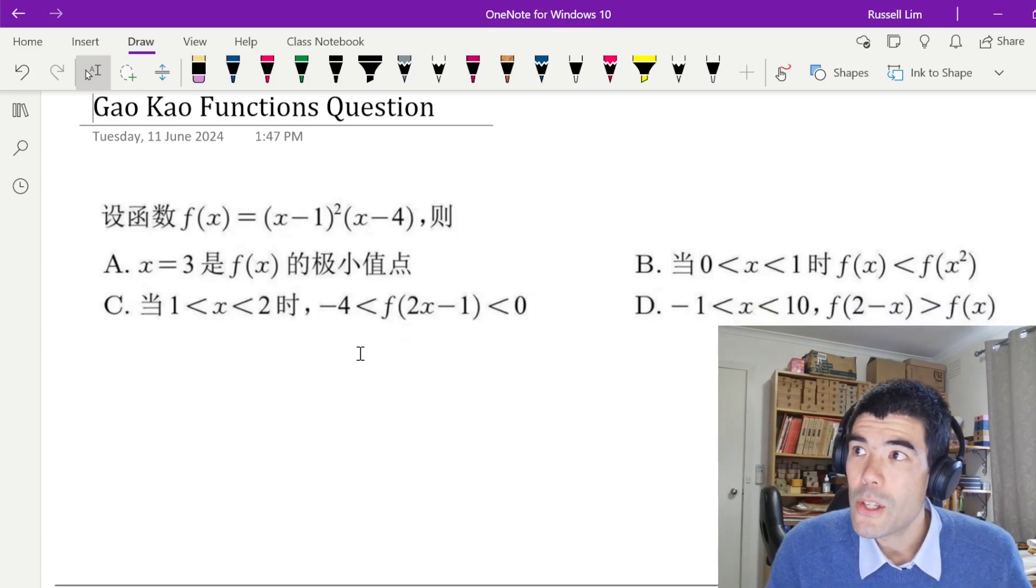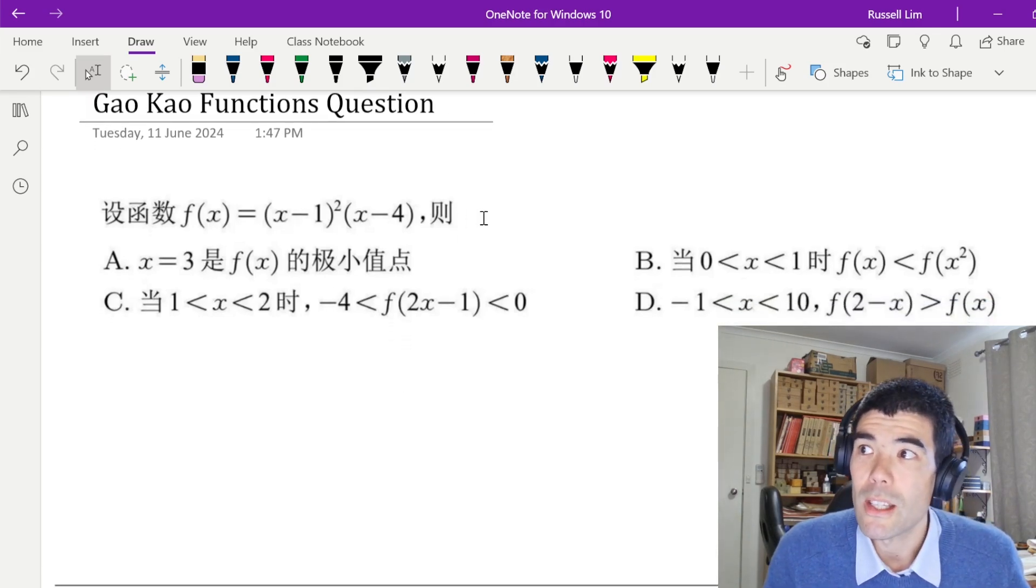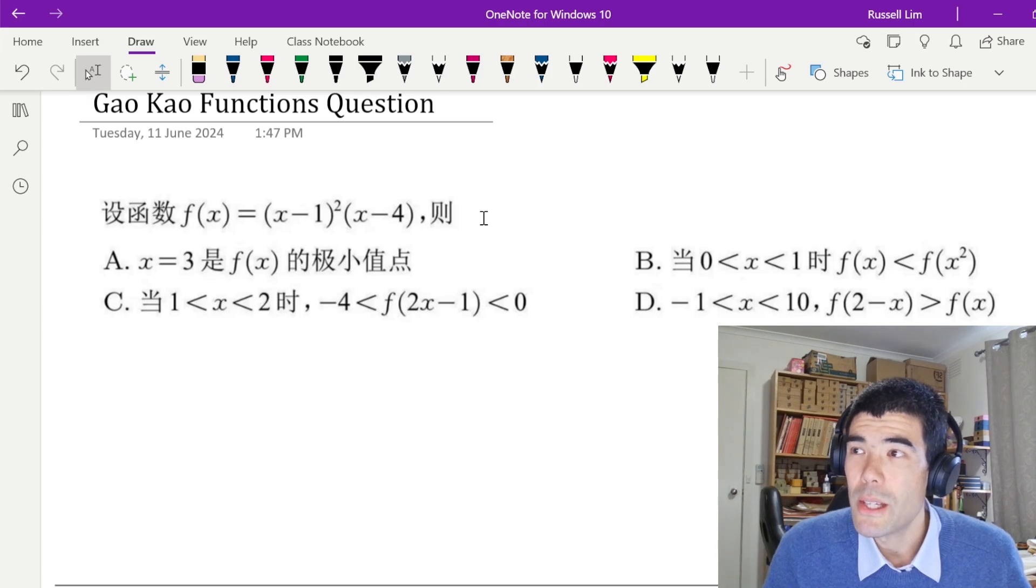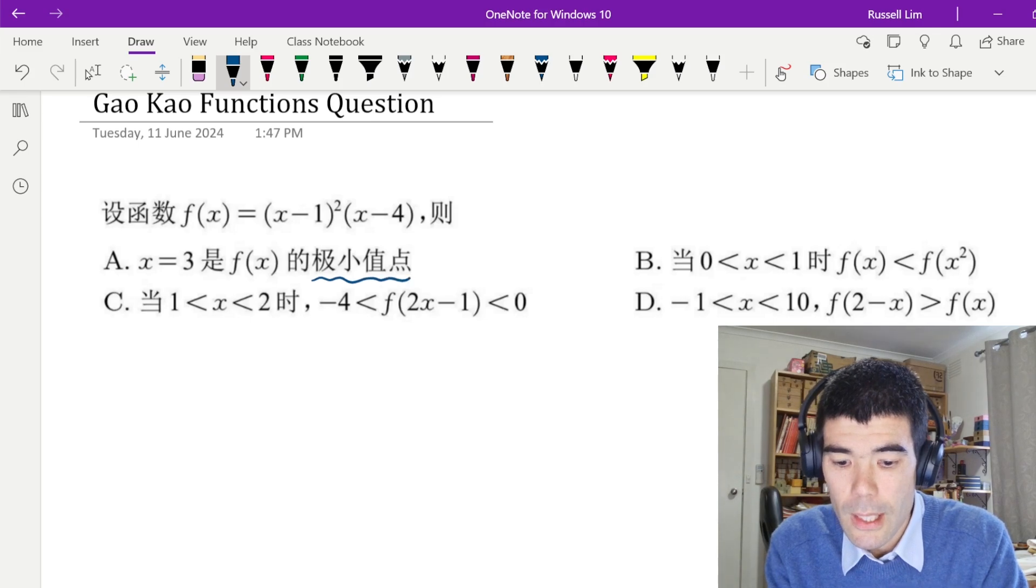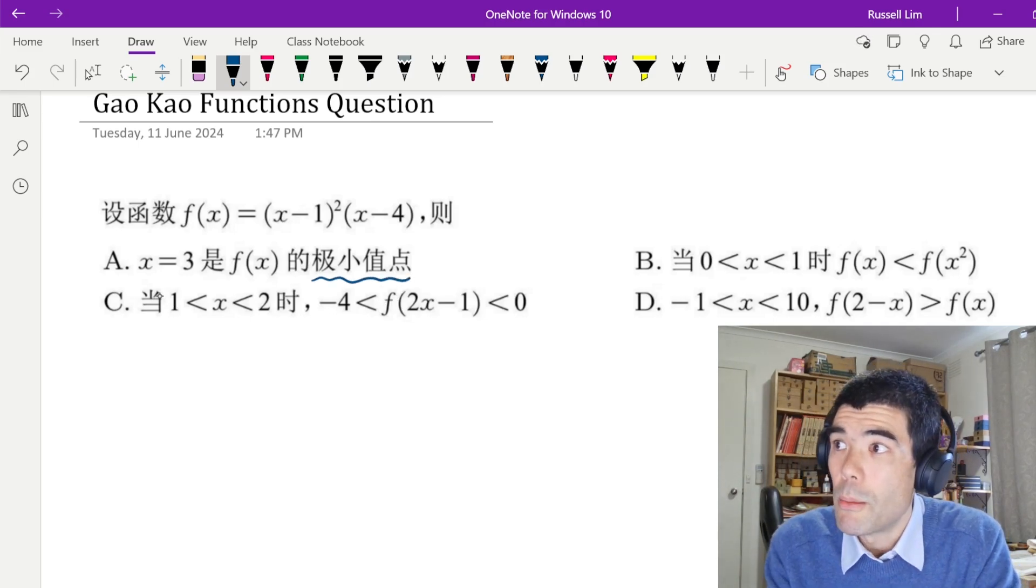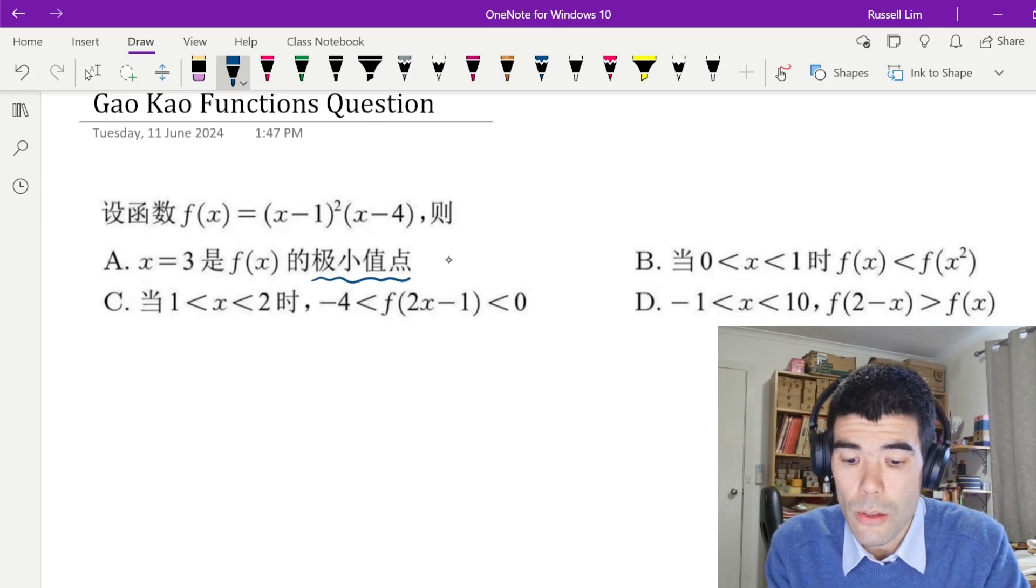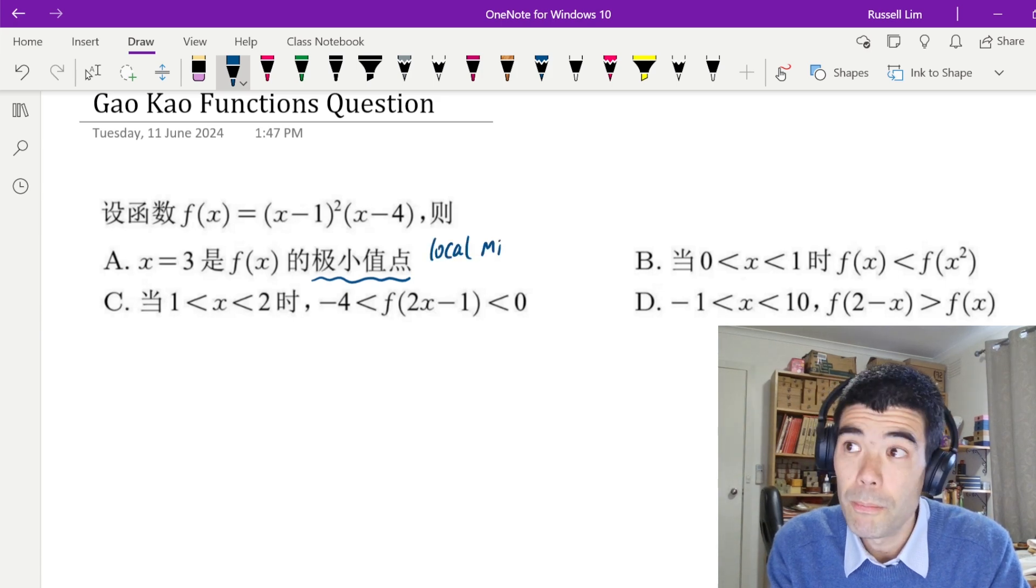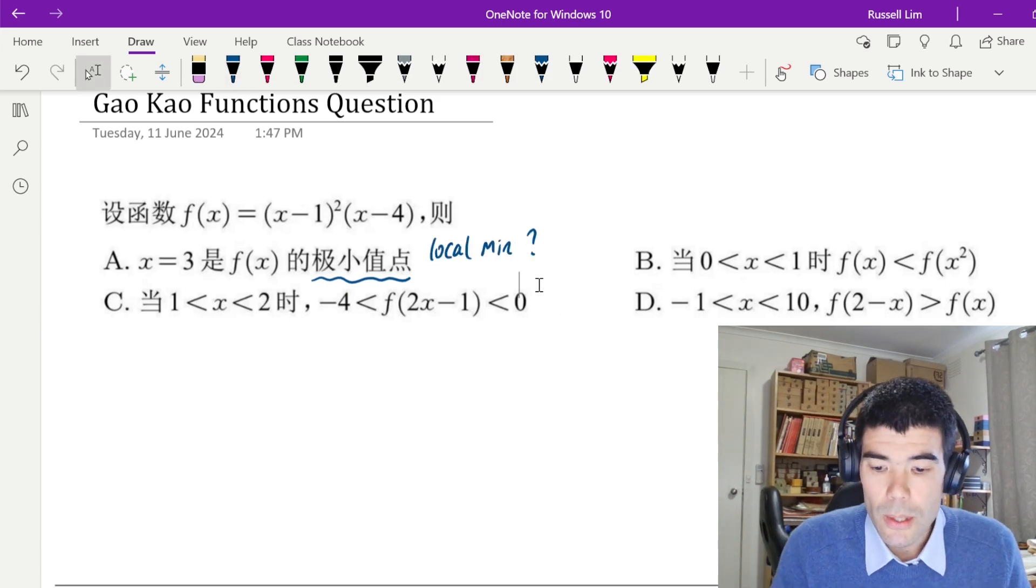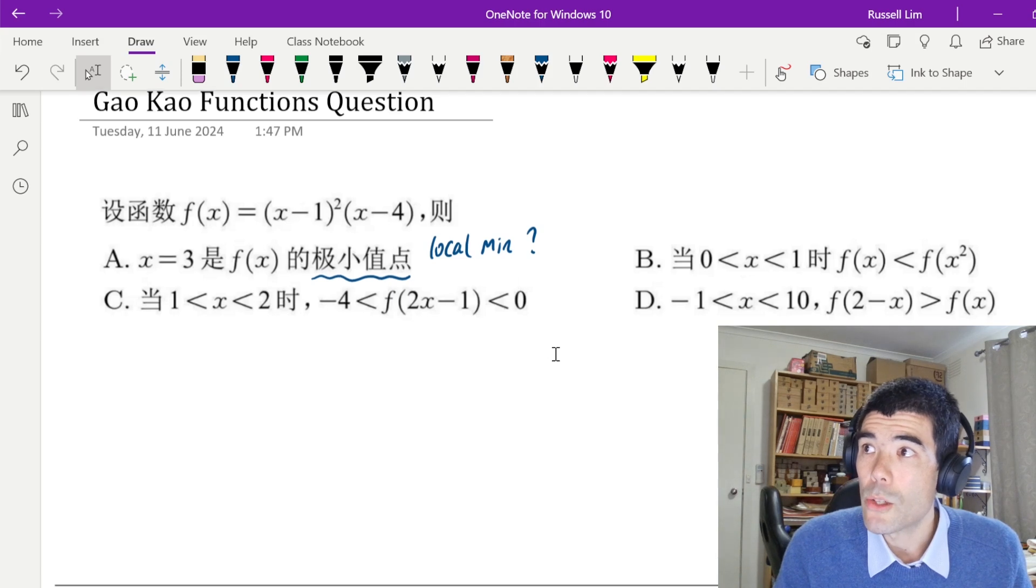Alright, so we have this cubic function. And the good thing about this question actually is even if you don't understand any Chinese, you can probably pretty much understand it. We have this cubic function f(x), and we're asked, are these options true or false? Probably the one thing that does need translating is this in the first option, which is saying if x is equal to 3, does f(x) have a local minimum. Alright, so let's look at that option first and decide whether that is true or false.